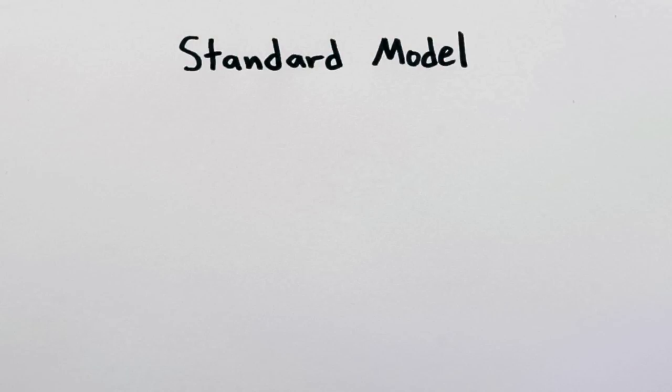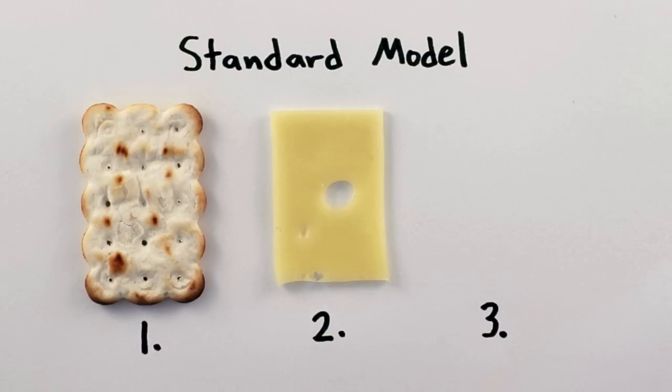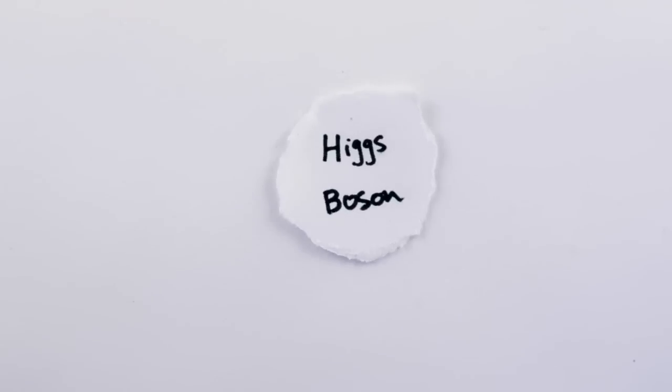But the standard model of particle physics also predicts something beyond cheese and crackers. That is, about one out of every bajillion collisions should produce a Higgs boson, which then decays into everyday stuff like electrons and photons, which are the same crumbs we catch in the detector all the time.